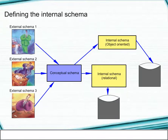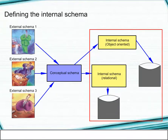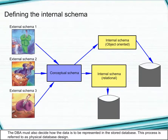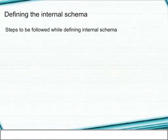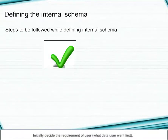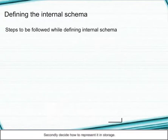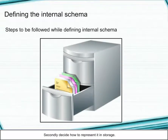Defining the internal schema: The DBA must also decide how the data is to be represented in the stored database. This process is referred to as physical database design. Steps to be followed: first, decide the requirements of the user — what data the user wants; second, decide how to represent it in storage.